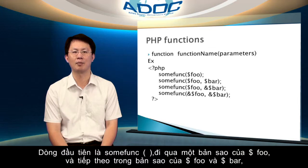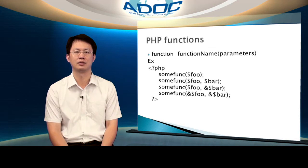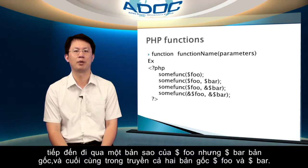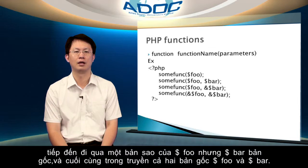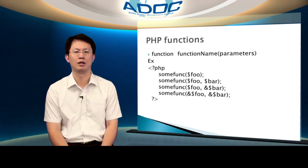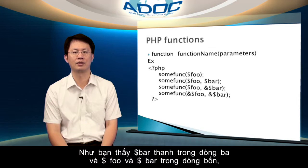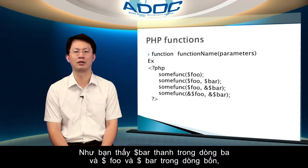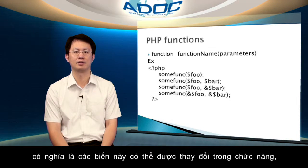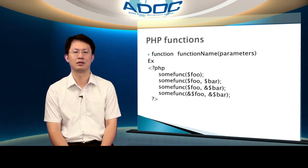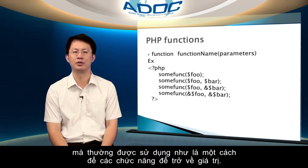The second passes in copies of foo and bar. The third passes in a copy of foo but the original bar. And the last passes in both the original foo and bar. Passing by reference, as with bar in line 3 and bar in line 4, means that these variables can be changed inside the functions, which is often used as a way for functions to return values.